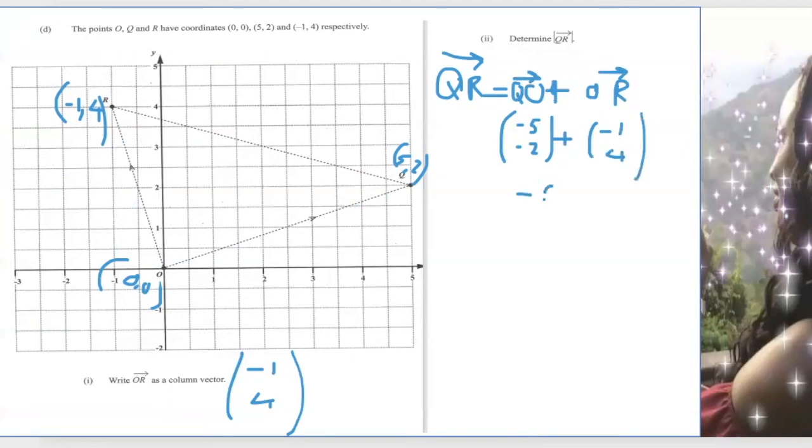So adding this, minus 5 and minus 1, that's minus 6. Minus 2 plus 4, that's 2. So this is QR.